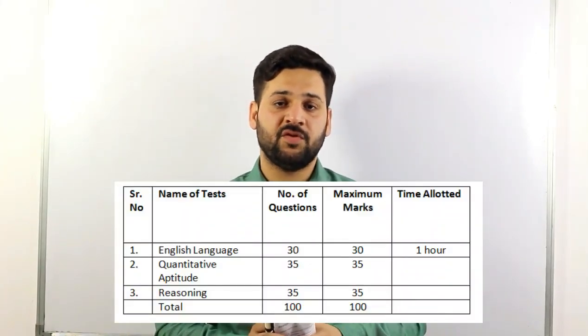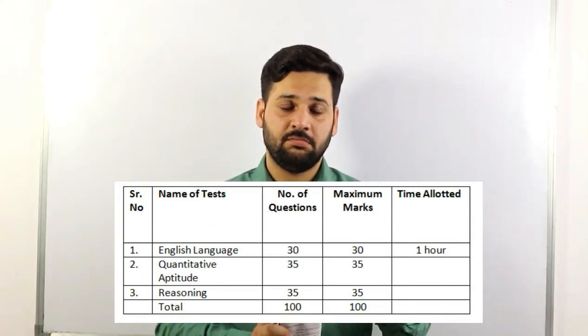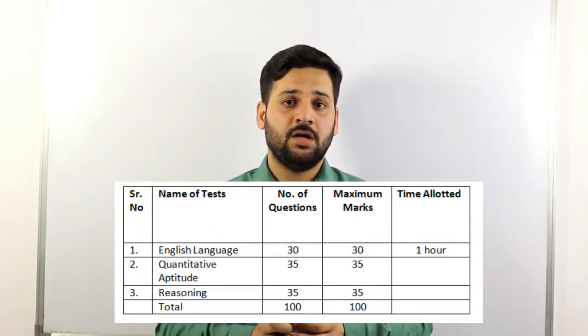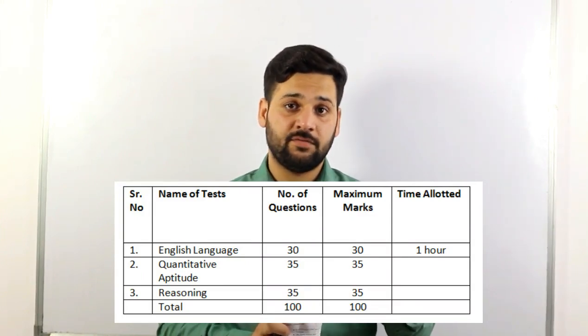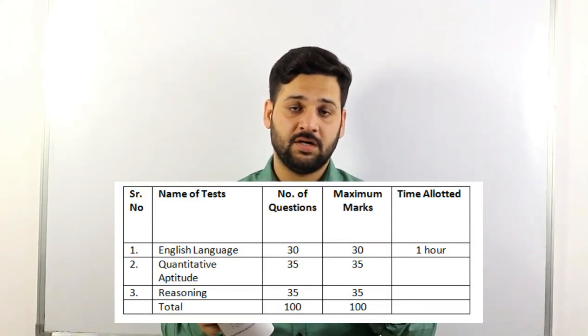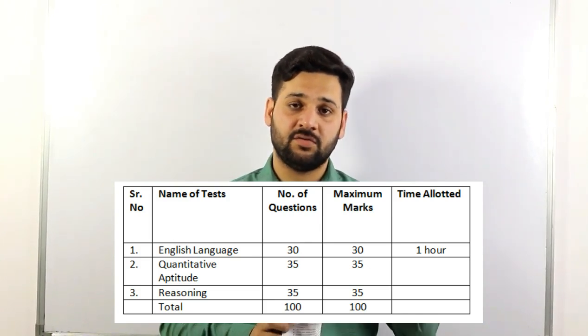In the IBPS PO pre-exam there are three sections. The first is the English section with 30 questions, one mark each. Next is Quantitative Aptitude with 35 questions, 35 marks. Reasoning Ability also has 35 marks. One hour is allotted to the whole exam and there is no sectional timing at all.